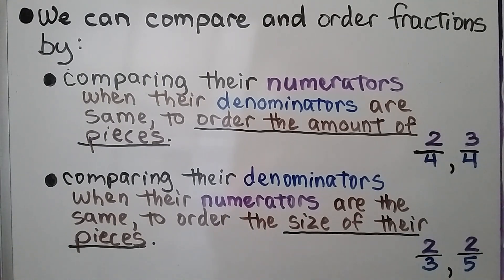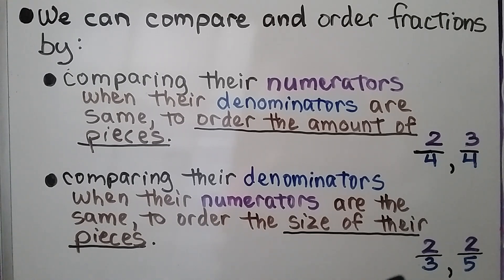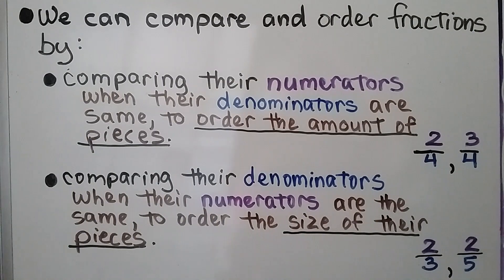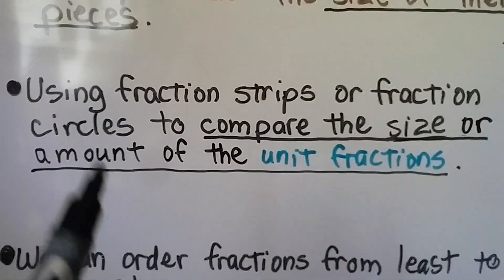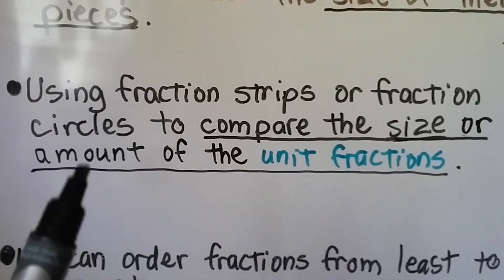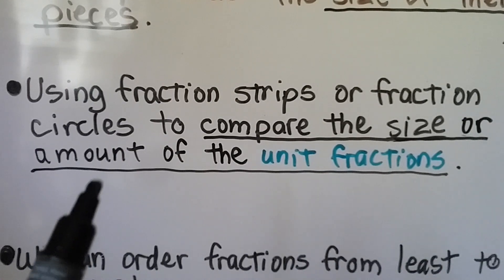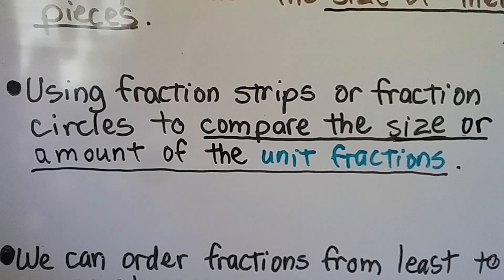We can also compare their denominators when the numerators are the same — we can order the size of their pieces. For example, 2-thirds and 2-fifths have the same numerator. We can also use fraction strips or fraction circles to compare the size or amount of the unit fractions.